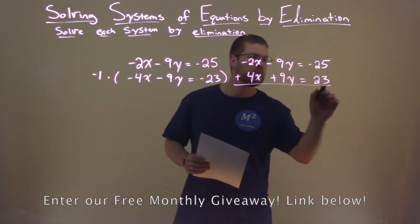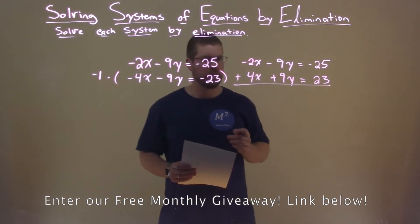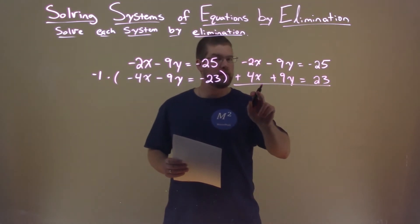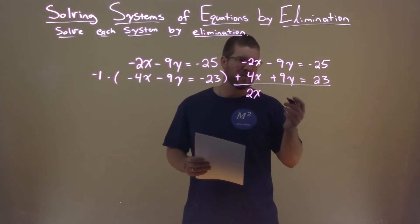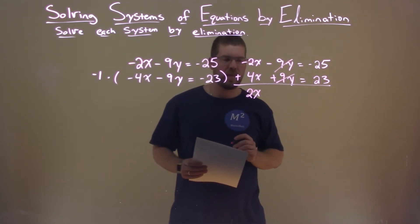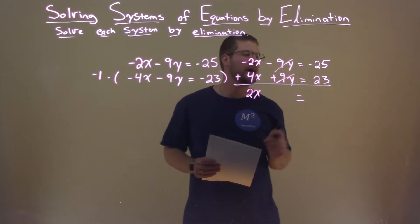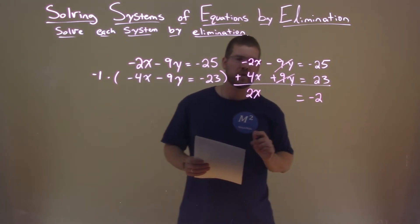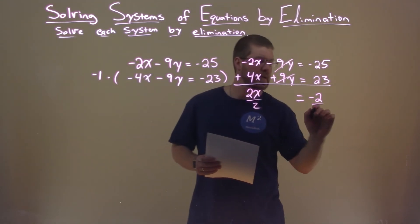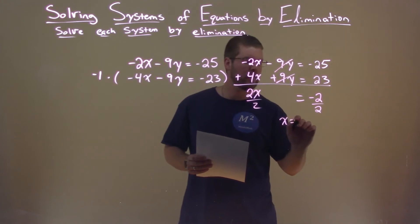Now I can add my two equations to eliminate the y variable. Negative 2x plus 4x is positive 2x. Negative 9y plus 9y is 0y, don't really need to write that. Equals negative 25 plus 23 is negative 2. I now divide both sides by 2 here, and we're left with x by itself, which is negative 1.